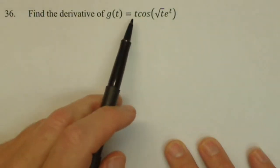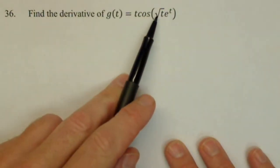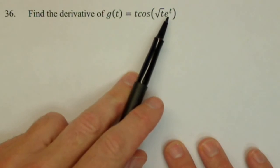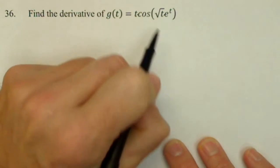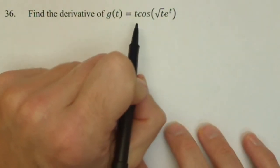So we're going to find the derivative of t times cosine of square root of t times e to the t. So we have a product here and we also have a product here, and we're also going to have a chain rule. So a lot going on in this one.